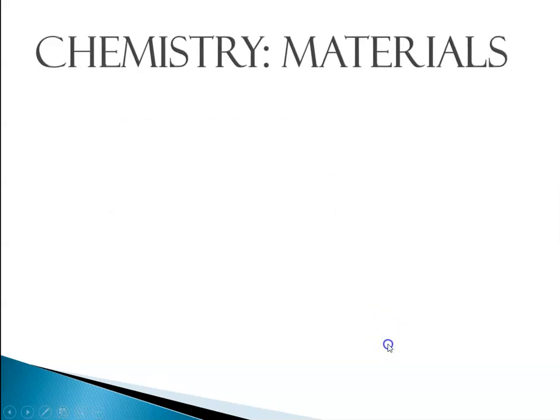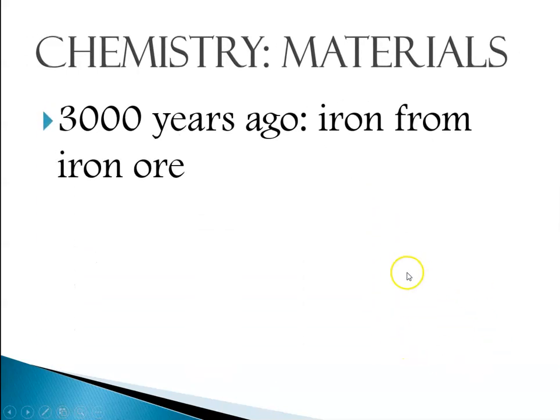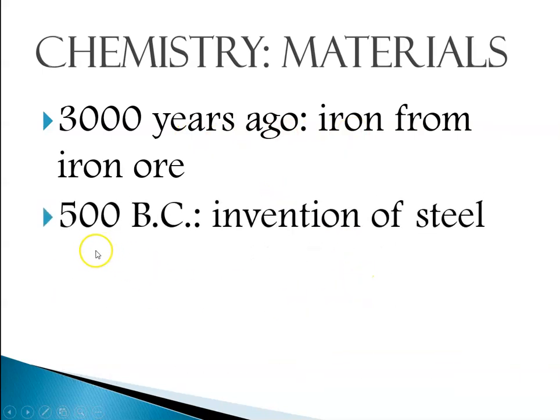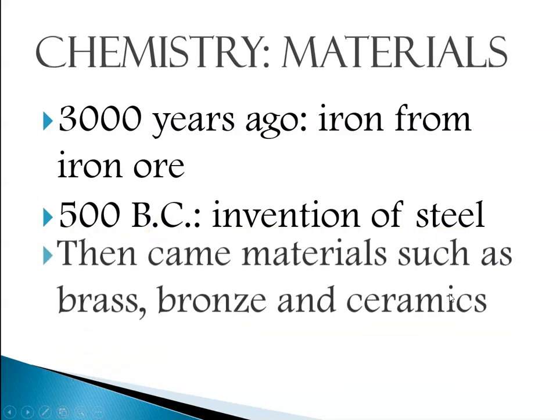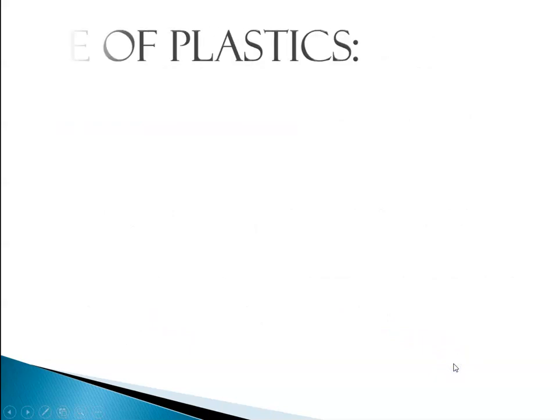Material science - we talk about the history of material science. 3000 years ago iron was first extracted from iron ore. Sometime later, about 500 BC, steel was invented, and then later on things like brass and bronze, these are alloys, mixtures of metals, and eventually ceramics.